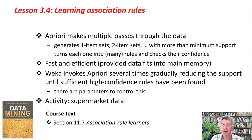That's a priori. It makes multiple passes through the data, generating one-item sets, two-item sets, and so on with more than the minimum support. It turns each one into rules and checks their confidence. It's fast and efficient, providing that the data fits in memory. Weka invokes the algorithm several times, gradually reducing the support until sufficient high-confidence rules have been found. There are many parameters that control this iteration. In the activity, you'll look at the supermarket data and realize just how difficult it is to come up with meaningful association rules in a real data set.